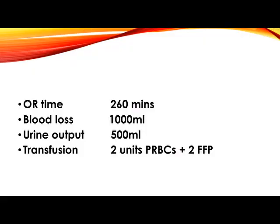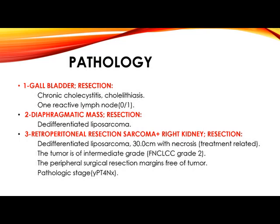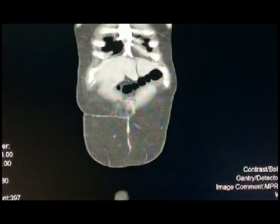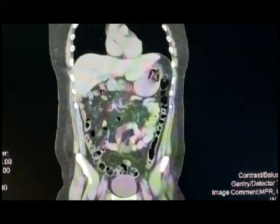The specimen weighed around 4 kilograms and 300 grams. OR time was 260 minutes with 1 liter blood loss; 2 units of blood and 2 FFP were transfused. Pathology came back as dedifferentiated liposarcoma with involvement of the diaphragm, intermediate-grade, ypT3. Follow-up scan at around 48 months showed no evidence of recurrence.